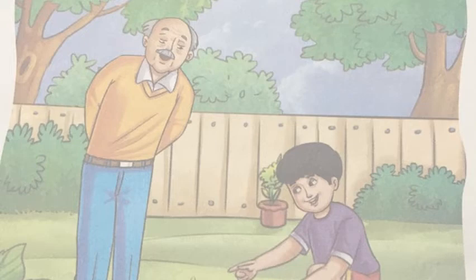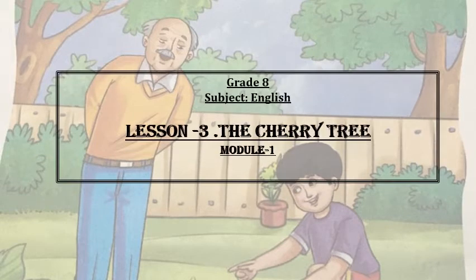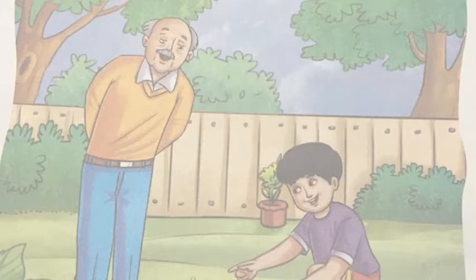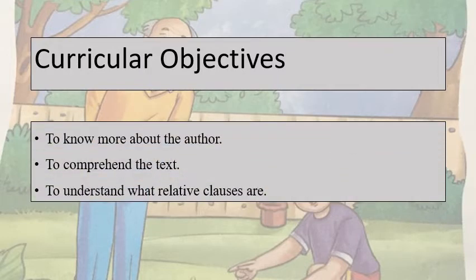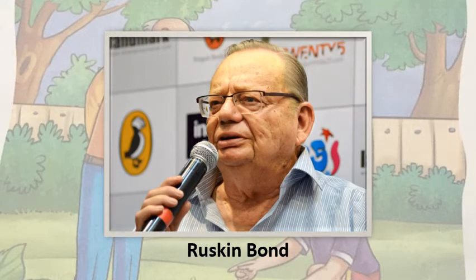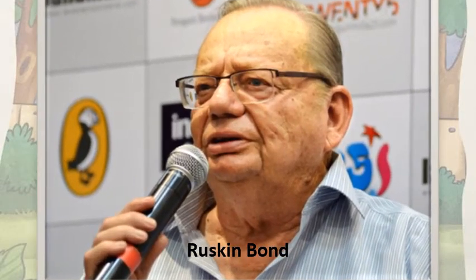Good morning, my dear students. Welcome to the English classes. This is the third lesson of your Rain Tree English course book, The Cherry Tree, module 1. In this module you are going to know more about the author of this lesson, and you will comprehend the text and understand what relative clauses are. Now this is the author of our lesson. Have you ever seen his picture? Have you ever heard about Ruskin Bond? He is a very famous writer.